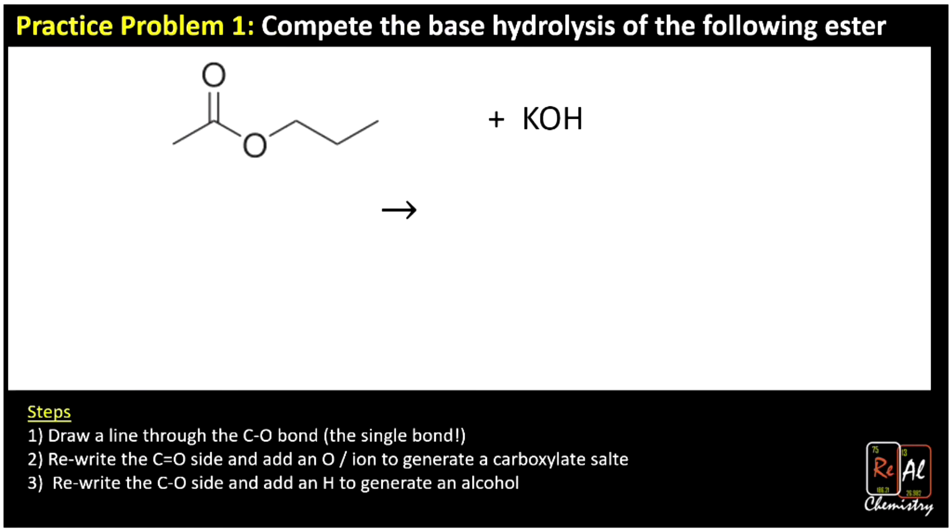Let's give you a few rules here that will always help you write the products. First, we draw a line through the C-O single bond. Then we're going to rewrite the C double-bonded to the O side, so this left-hand side in this case. And we're going to go ahead and add an O. I'll track the base in orange this time, so we're adding that O. And then we're going to add that K⁺ and O⁻. We do write the charges.